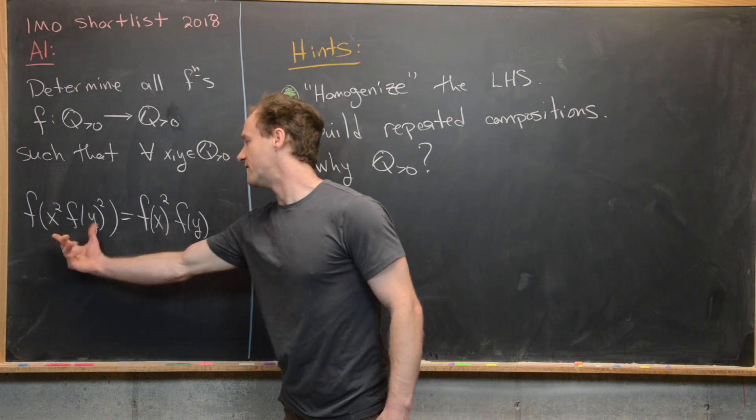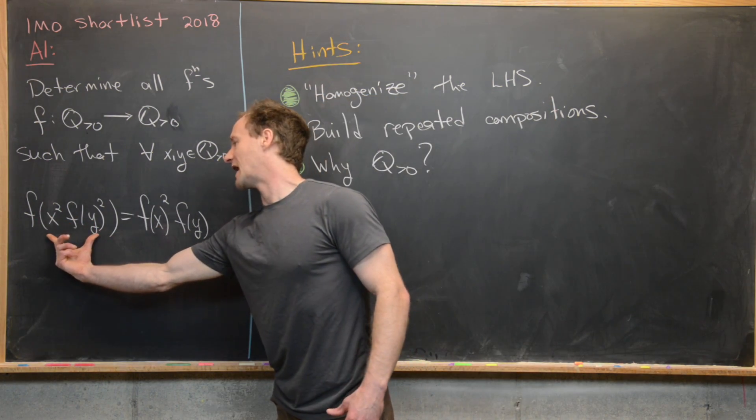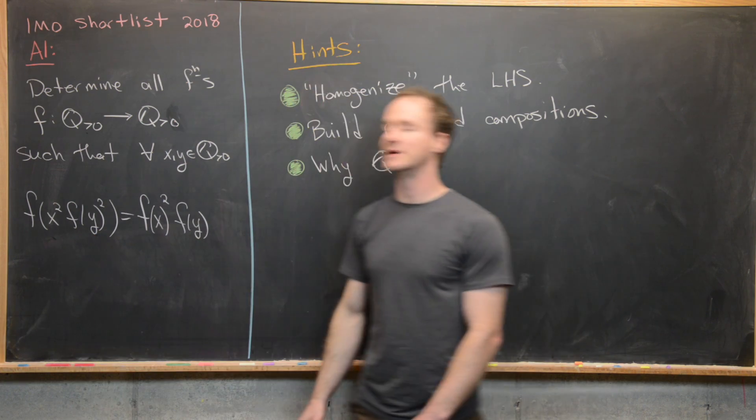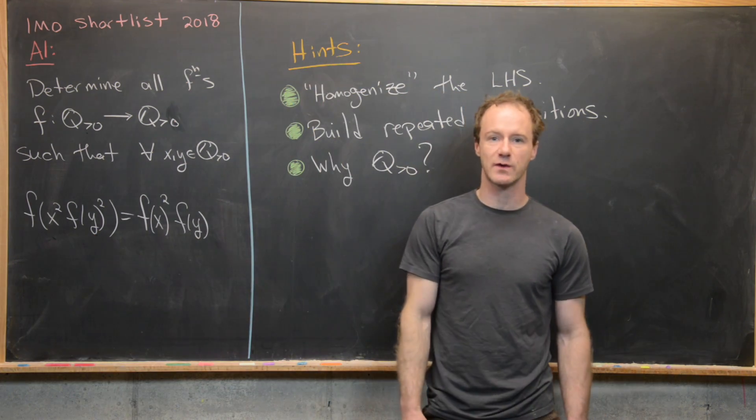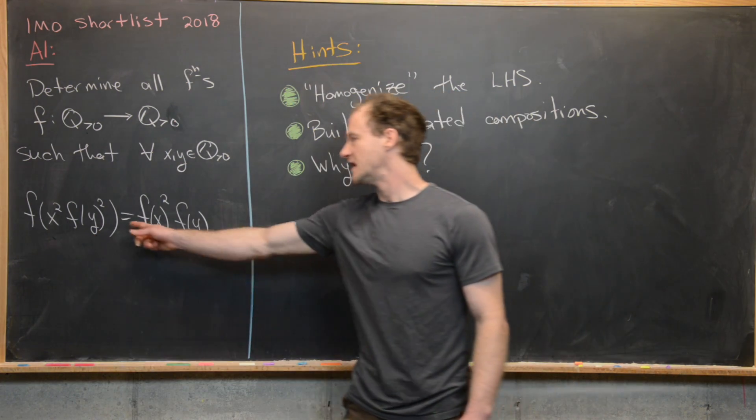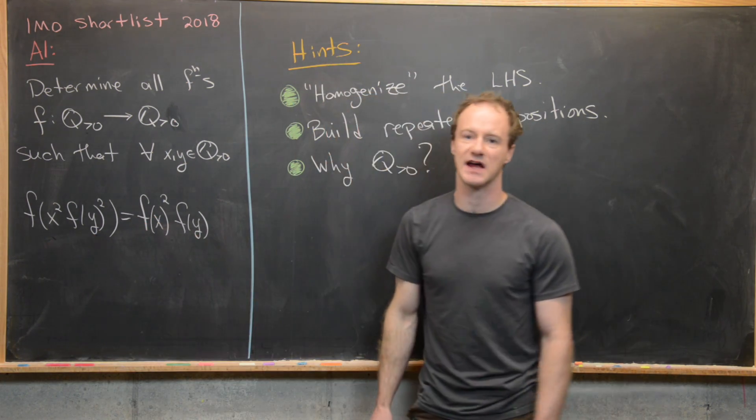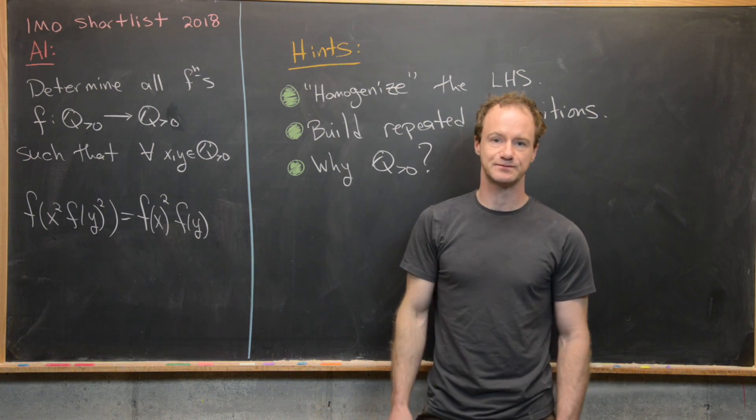Specifically, f evaluated at x² times f(y²) is equal to f(x)² times f(y).